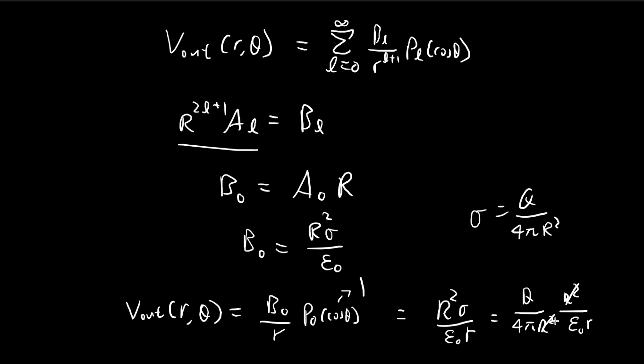So r squares cancel out. So what you get now is 1 over 4 pi epsilon divided by q over r, which is once again entirely consistent with what we had before.